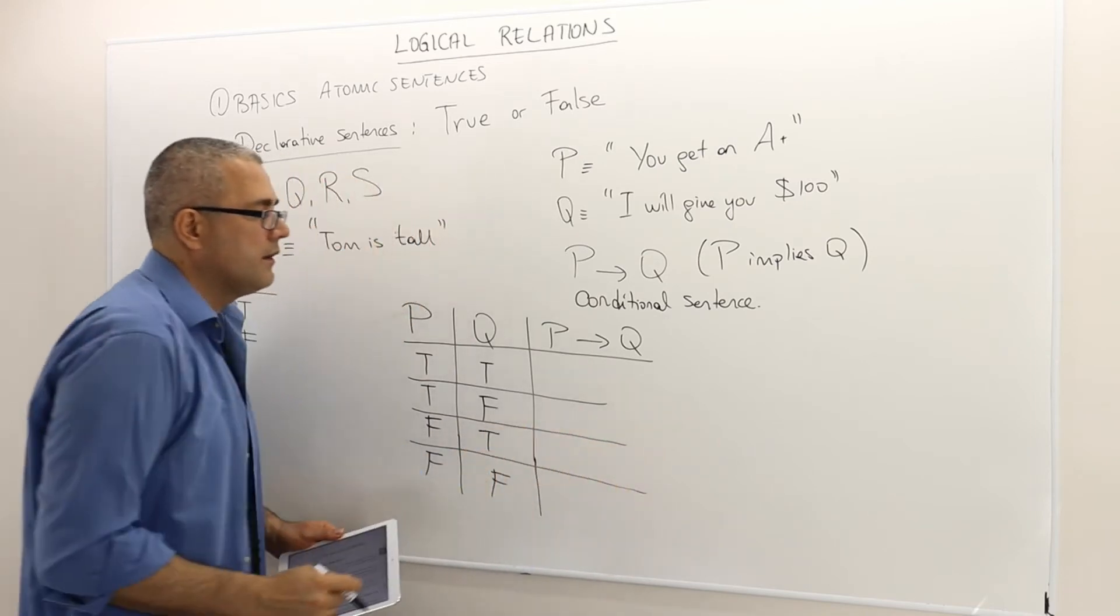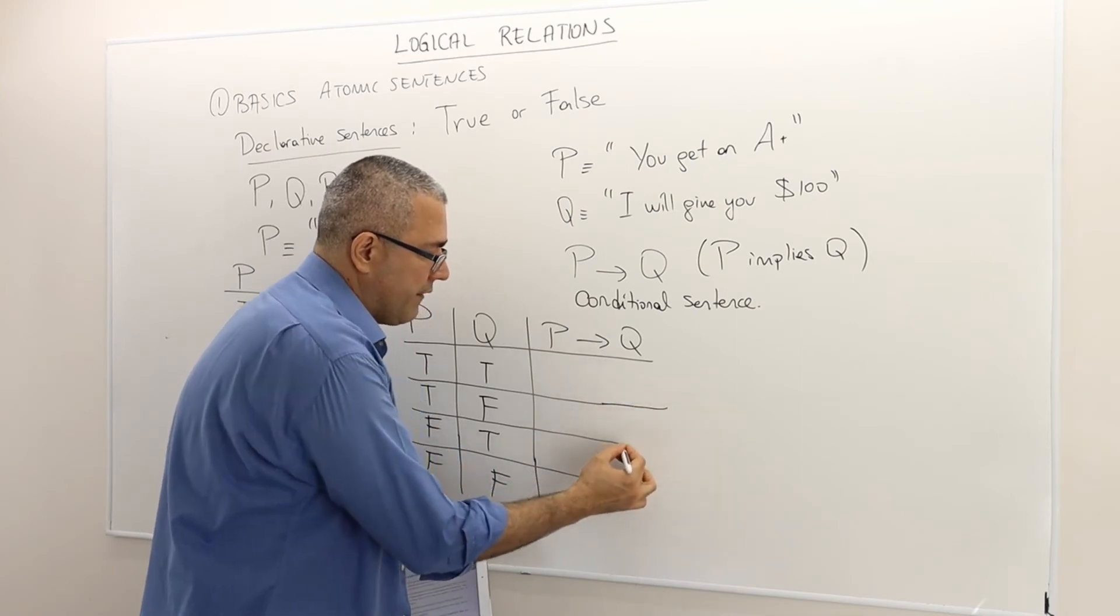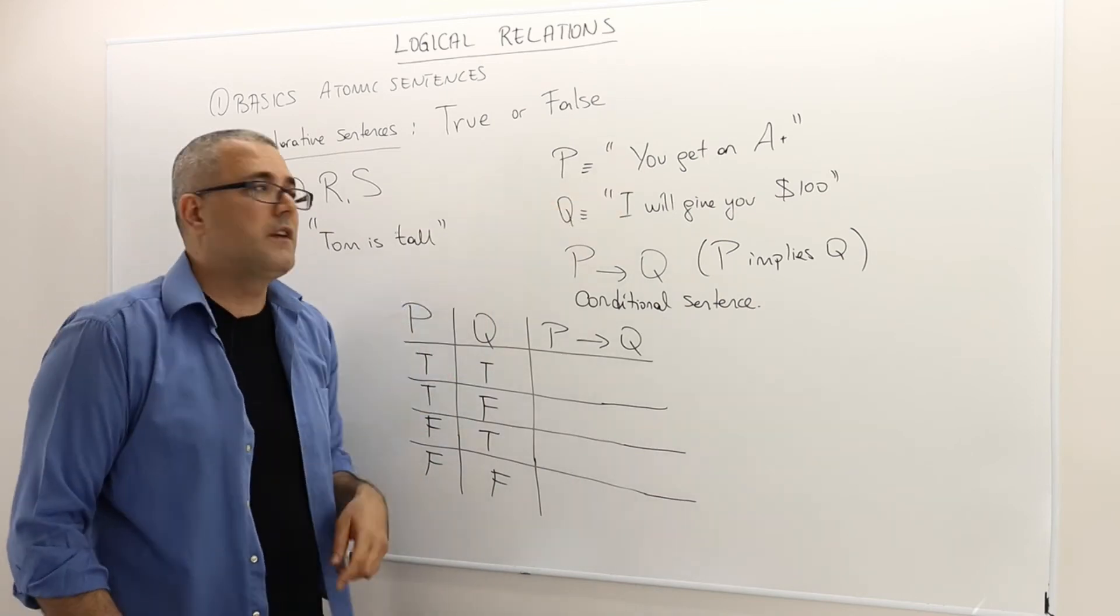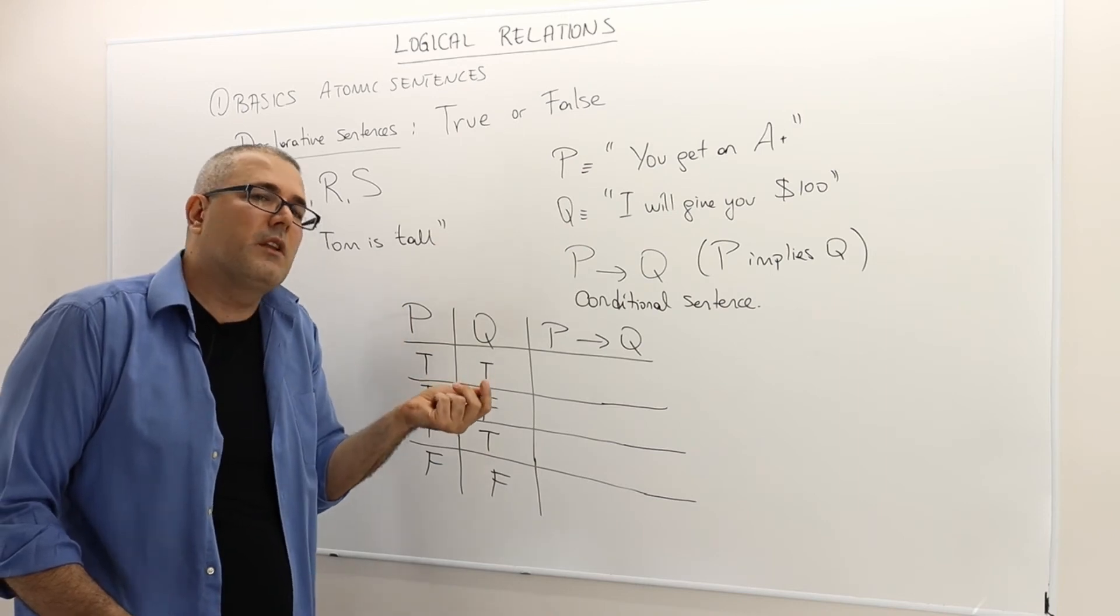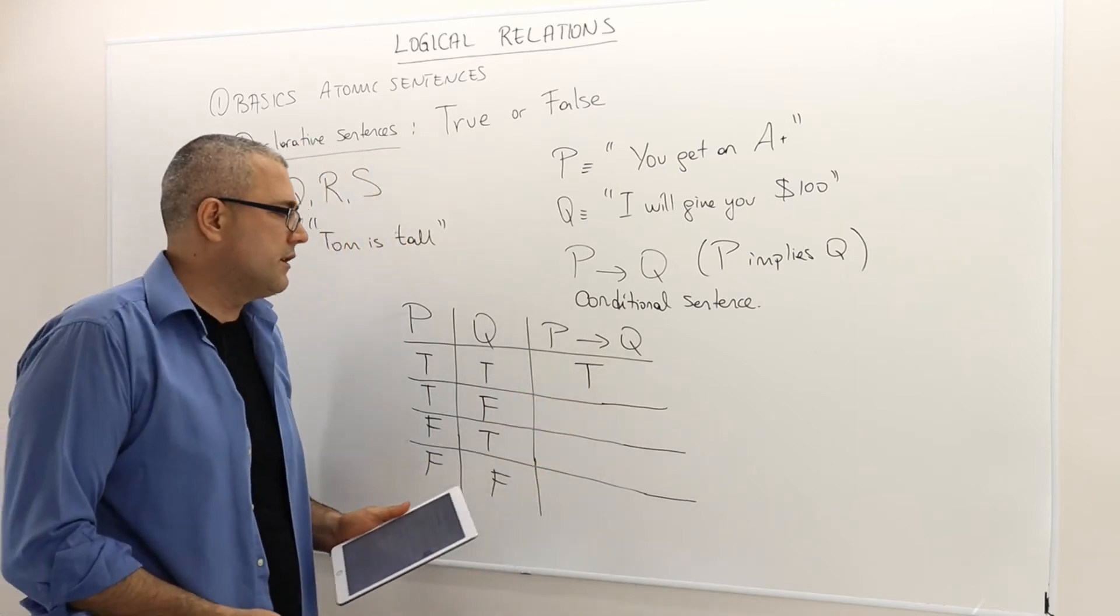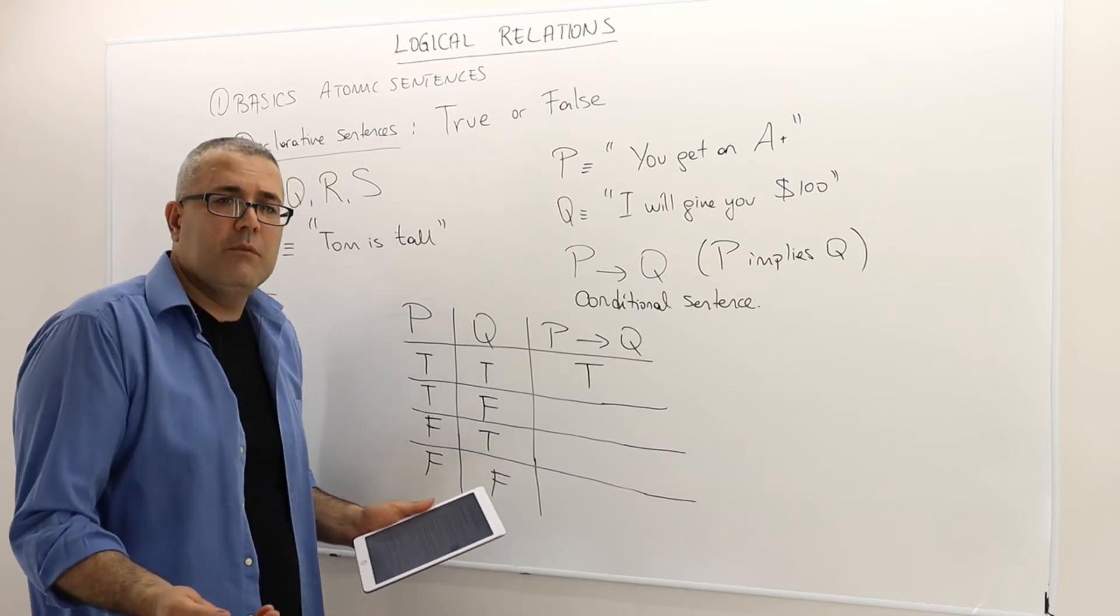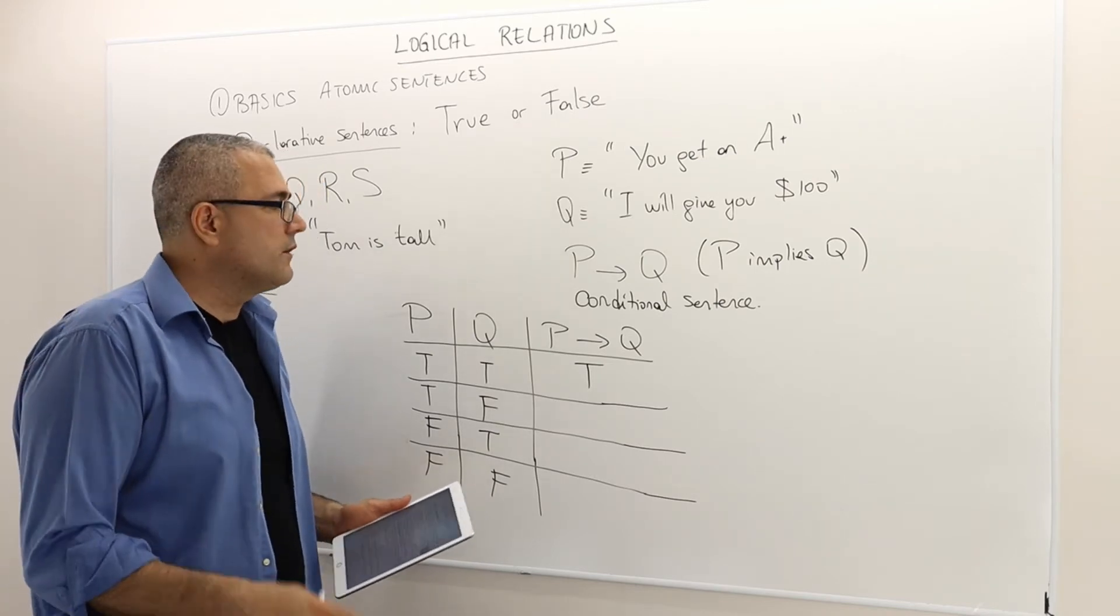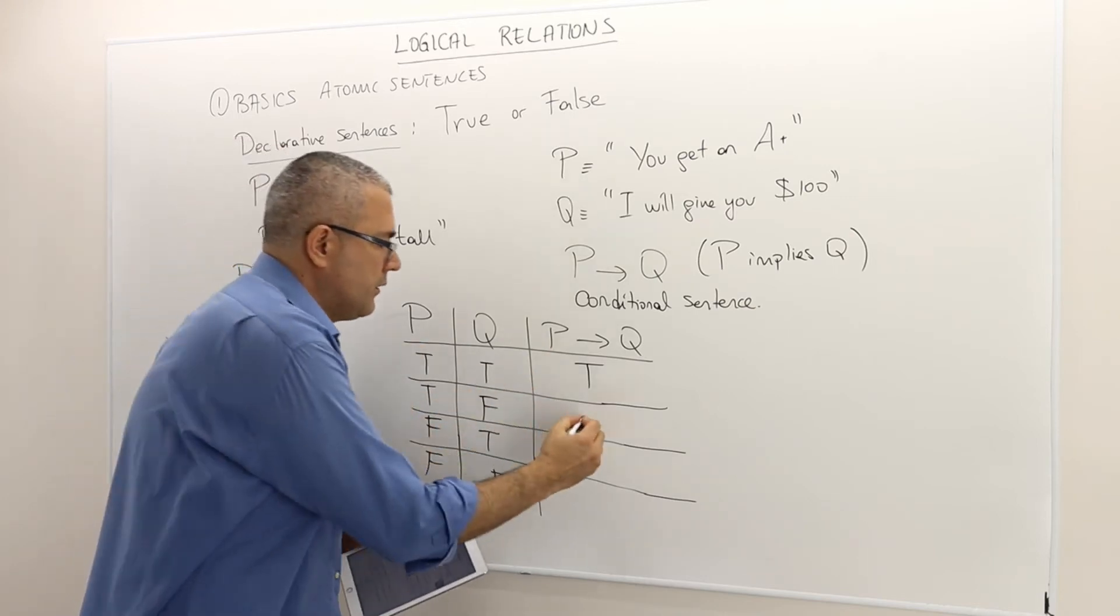So how do I fill the rest of this table? Here's the intuition that I have. Suppose a scenario where you actually get A+, and I pay you $100. I kept my promise. You succeeded getting A+. Therefore, this statement is true. We can't deny that it's true. What if you get an A+, but I don't keep my promise, and I pay you, I don't know, $50, so not $100. I didn't keep my promise. So this statement, this proposition is not true, it's false.